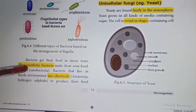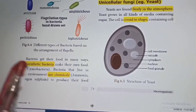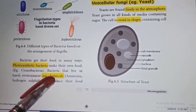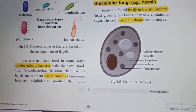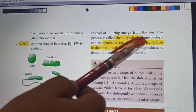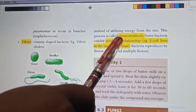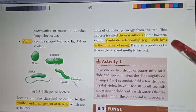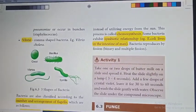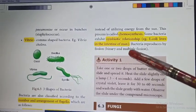Bacteria are divided according to their mode of nutrition. Photosynthetic bacteria prepare their own food — example, cyanobacteria. Some bacteria prepare their food with the help of chemicals such as ammonium and hydrogen sulfide; they are called chemosynthetic bacteria. Another type is symbiotic relationship, meaning mutual understanding — for example, E. coli, a bacteria that lives in the large intestine of man. Bacteria reproduces by fission, that is both binary and multiple fission.